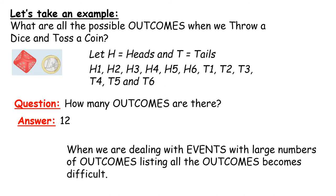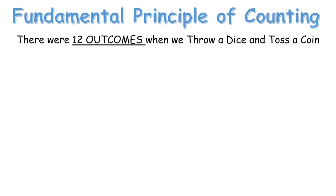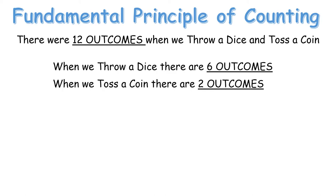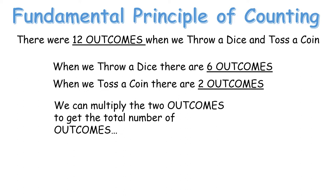When we're dealing with events with a large number of outcomes, listing all the outcomes becomes more difficult. So do we have a shortcut? This is called the fundamental principle of counting. The dice has 6 outcomes, the coin has 2 outcomes, and we multiply: 6 by 2 is 12. The fundamental principle of counting is all about multiplication.